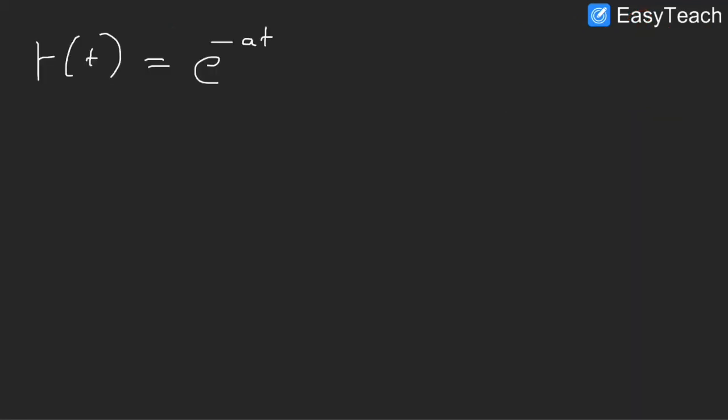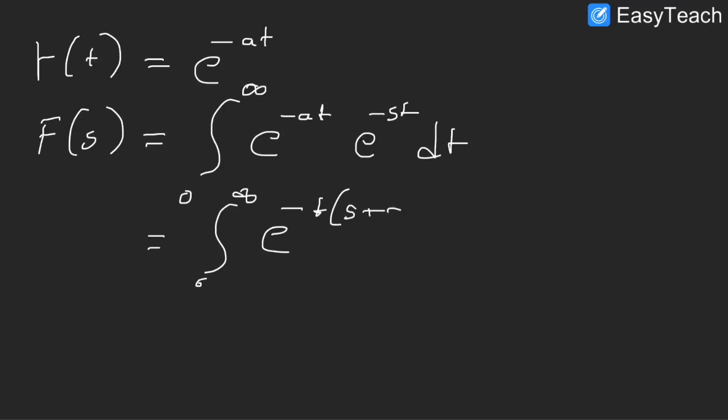So let us say you have a certain function f(t) equals e to the power of minus at in the time domain. So to get it in the frequency domain, you will see what I mean, is I'm going to do the Laplace transform of it. So I would integrate this e to the power of minus at times e to the power of minus st dt. And that would give me zero to infinity integral of e to the power of minus t(s plus a) dt. And on solving this, I would get 1 over s plus a.